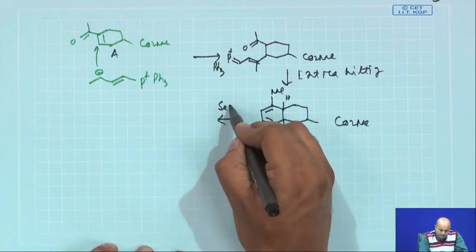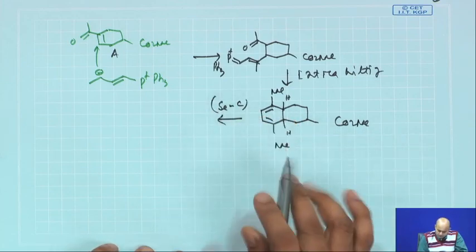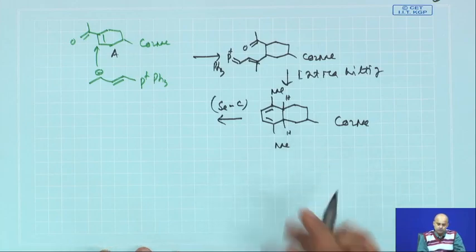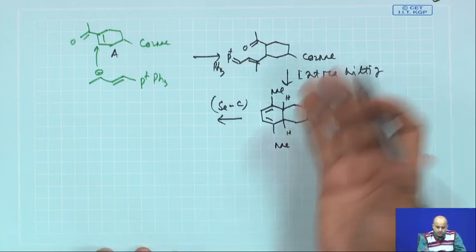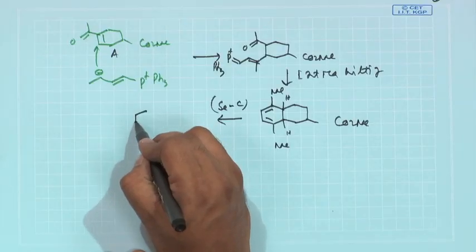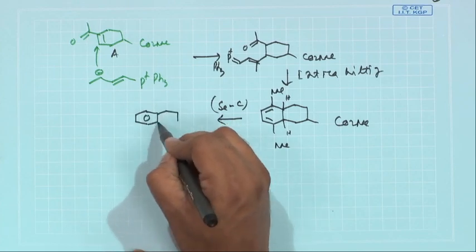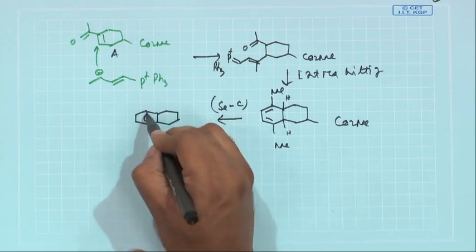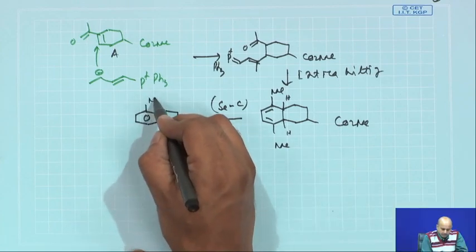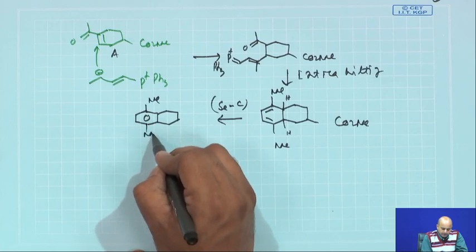Next you need to aromatize the molecule. You need to remove this hydrogen — normally done by standard selenium/carbon under oxidative conditions — you need to remove these two hydrogens to get this aromatized part.